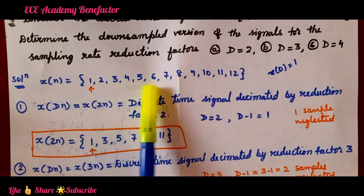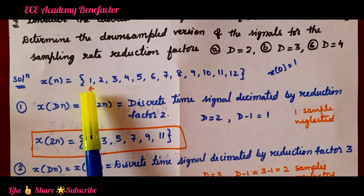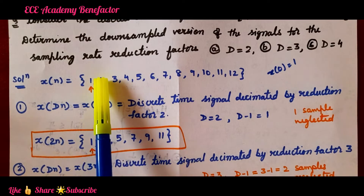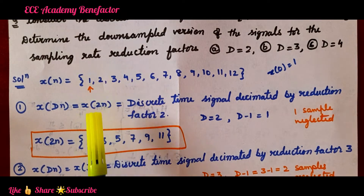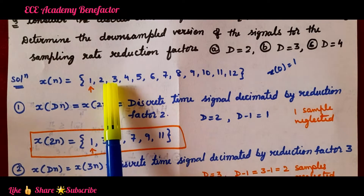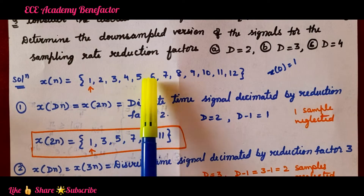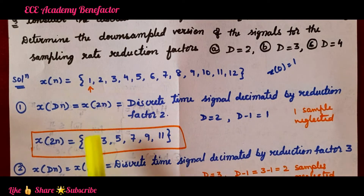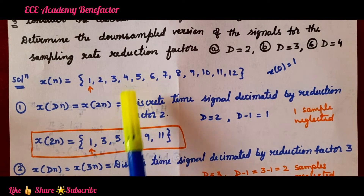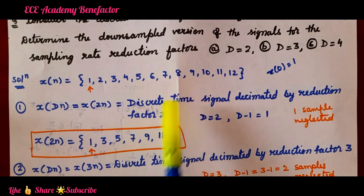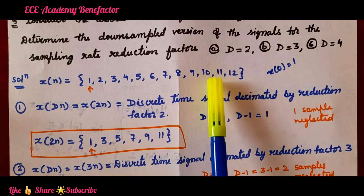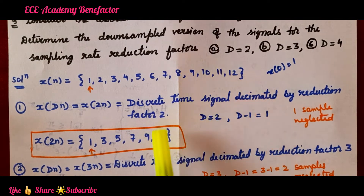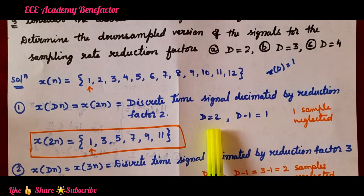From the given sequence, we write the first value 1 as it is, neglect 1 sample, then write 3, 5, 7, 9, neglect 10 and write 11. So x(2n) = {1, 3, 5, 7, 9, 11}. We neglect 1 sample because D equals 2, meaning D minus 1 equals 1 sample is neglected.